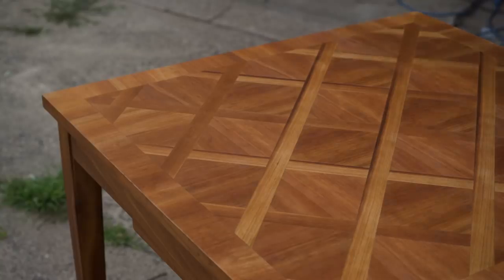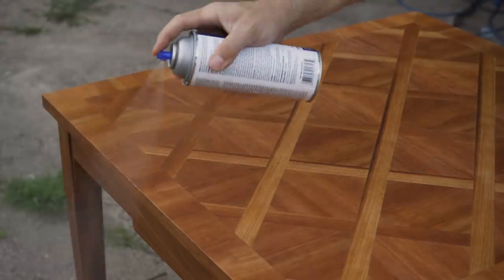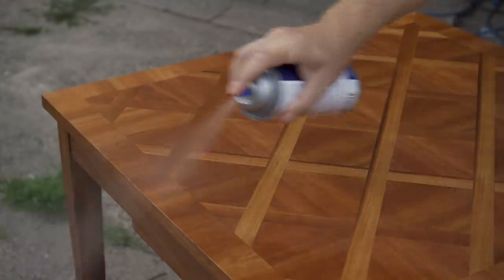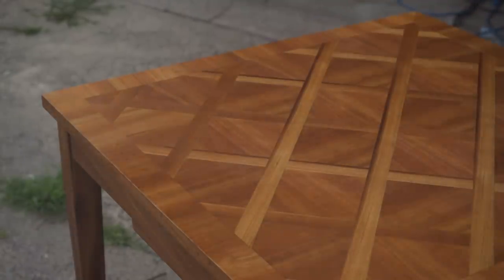The Danish oil helped to bring out the grain and the color of the wood. But sometimes I find that Danish oil on its own can look a little dull and flat. So after the Danish oil had dried, I applied a few coats of clear lacquer. This would give it a little bit more depth and some luster. And some more protection because the lacquer is a film finish that sits on top of the wood, as opposed to the Danish oil that soaks into the wood.